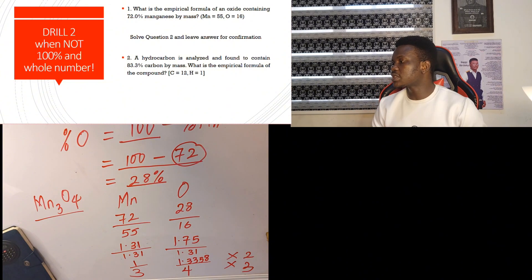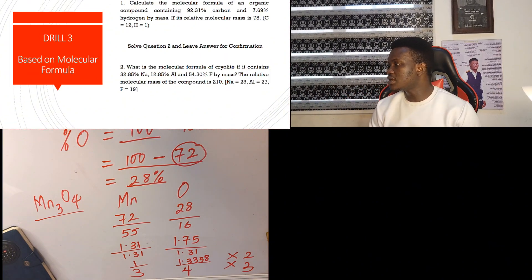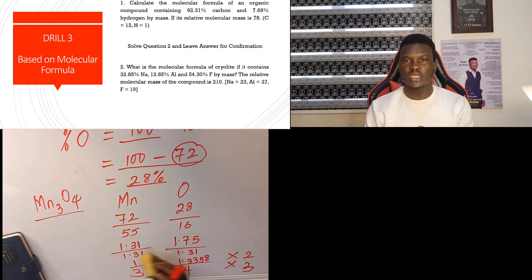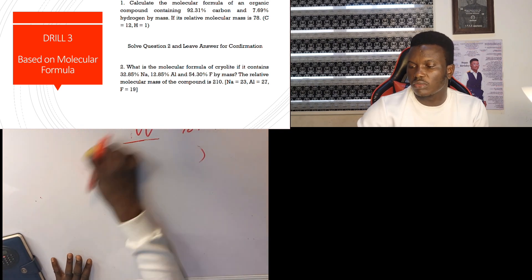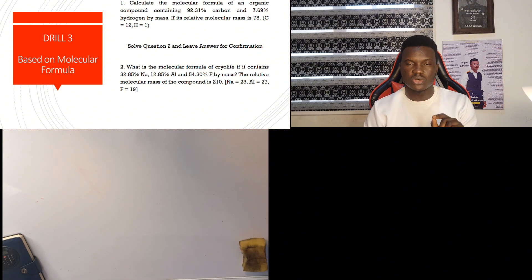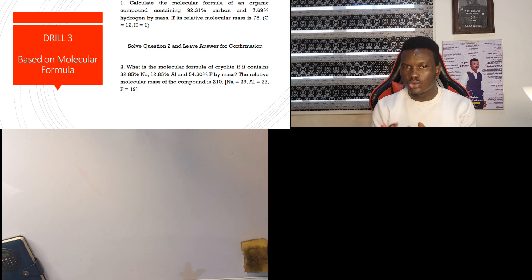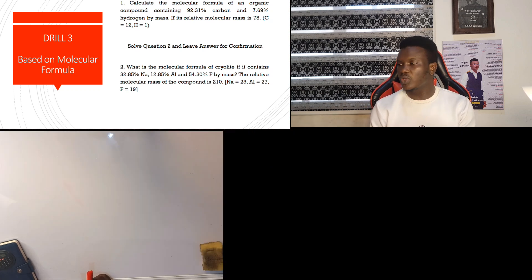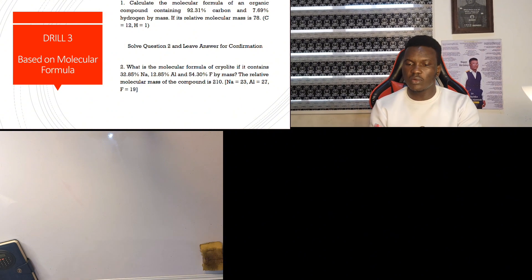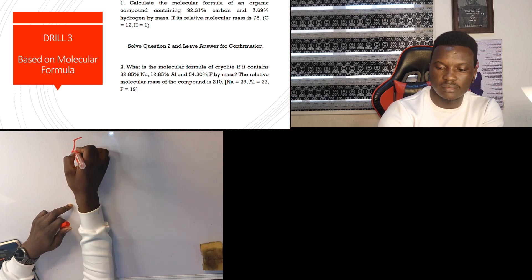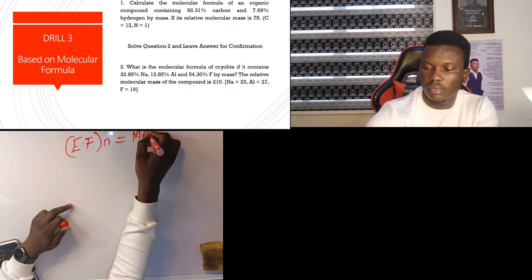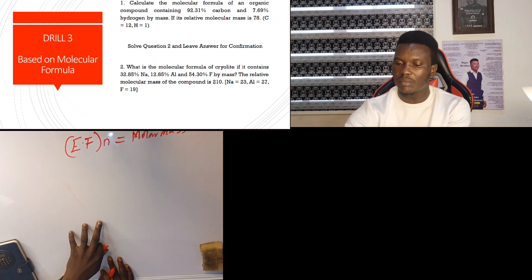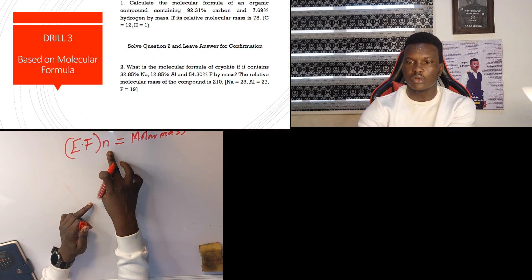Solve question two as well and leave your answer in the comment section. What I've been showing you is how to calculate empirical formula. Now we want to see how to calculate molecular formula — it is simple. After getting the empirical formula, you use N, where N equals the relative molecular mass divided by the empirical formula mass. You will be given the molar mass and the empirical formula, and N gives you the total multiplier for the molecular formula.